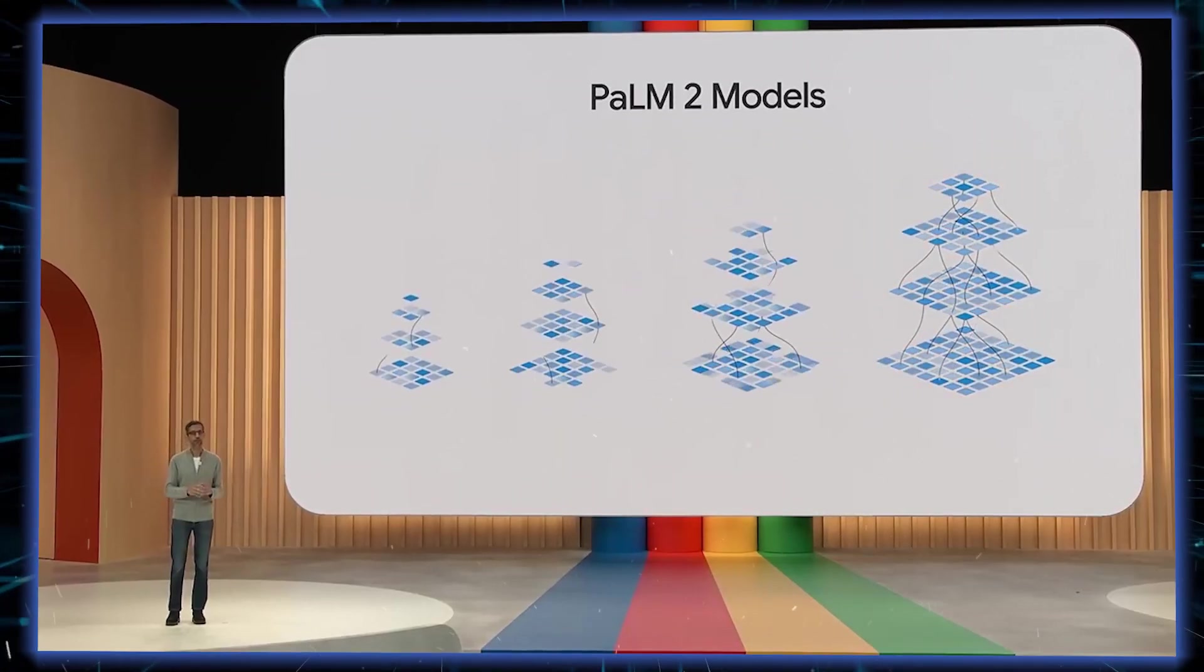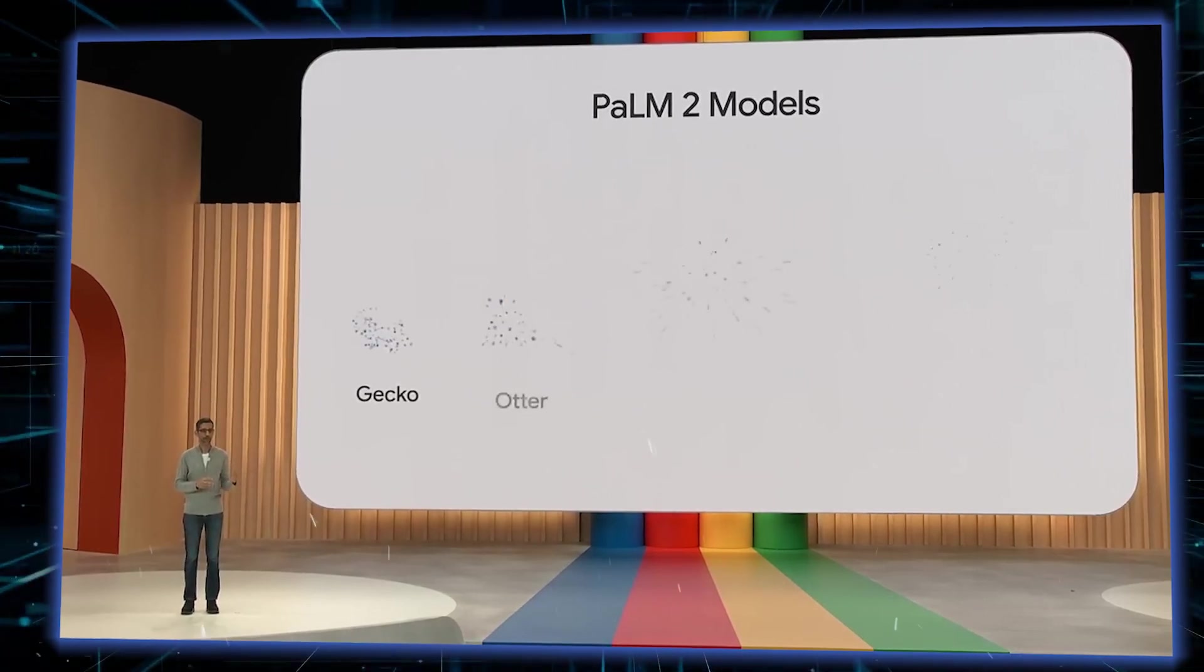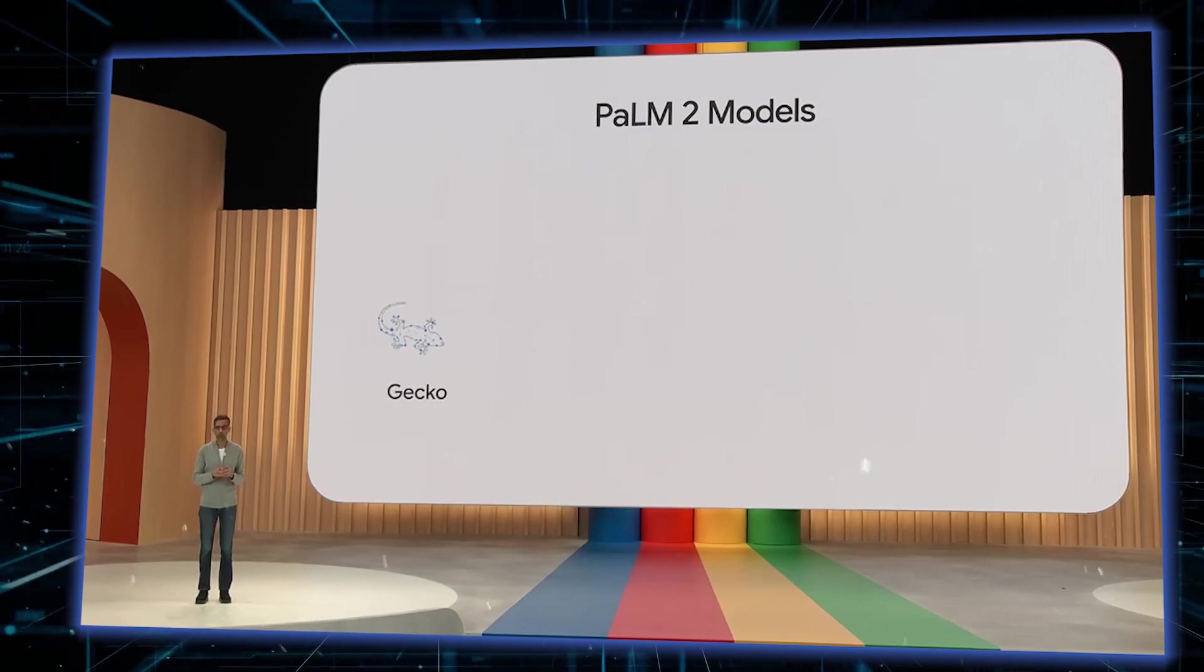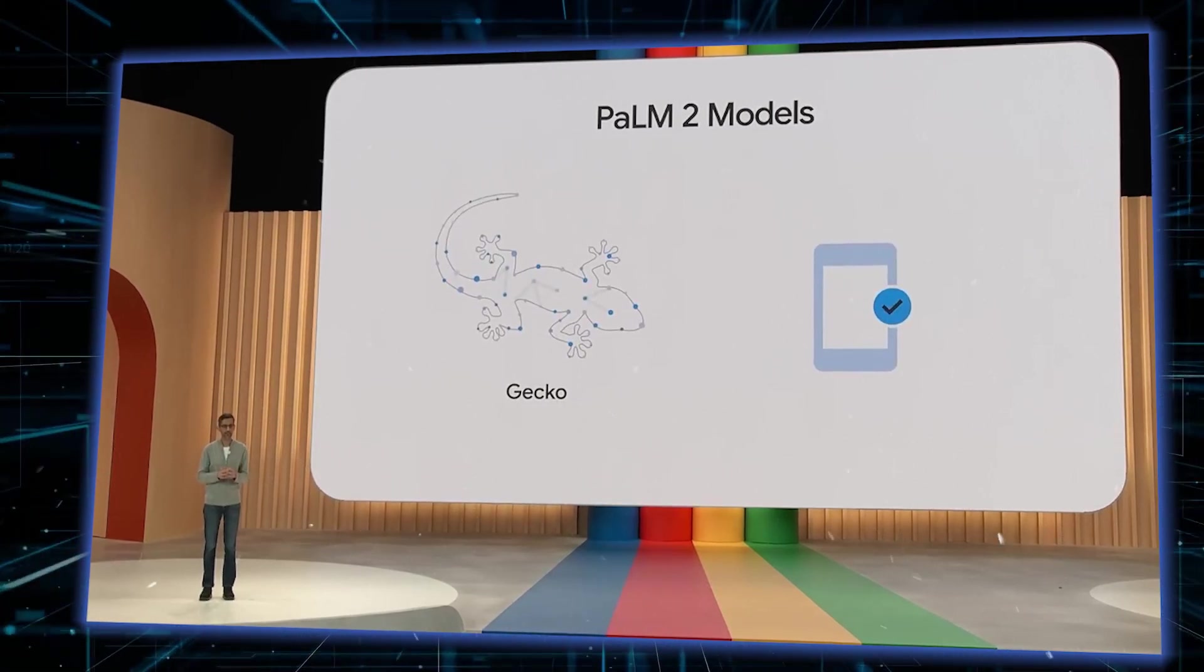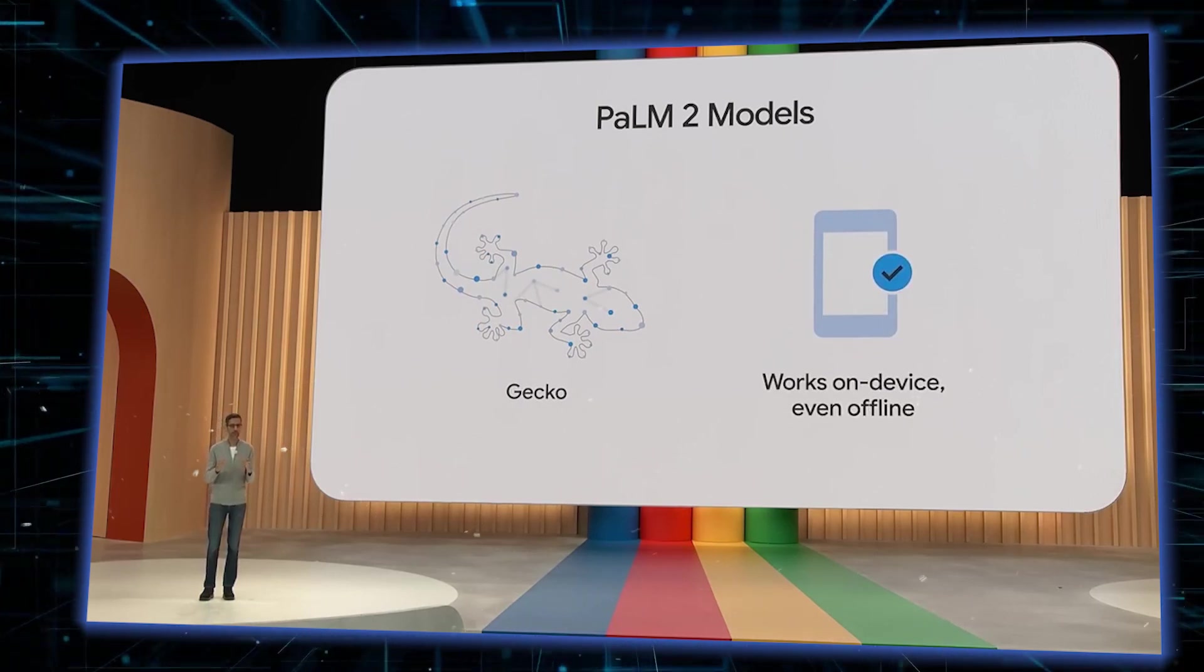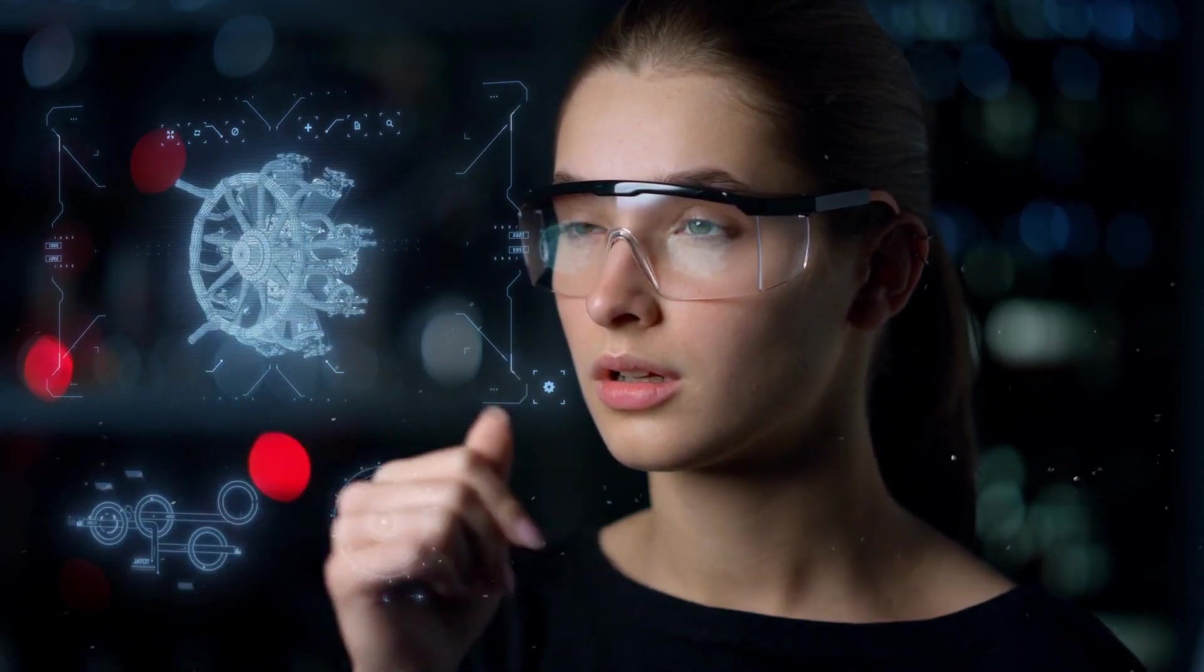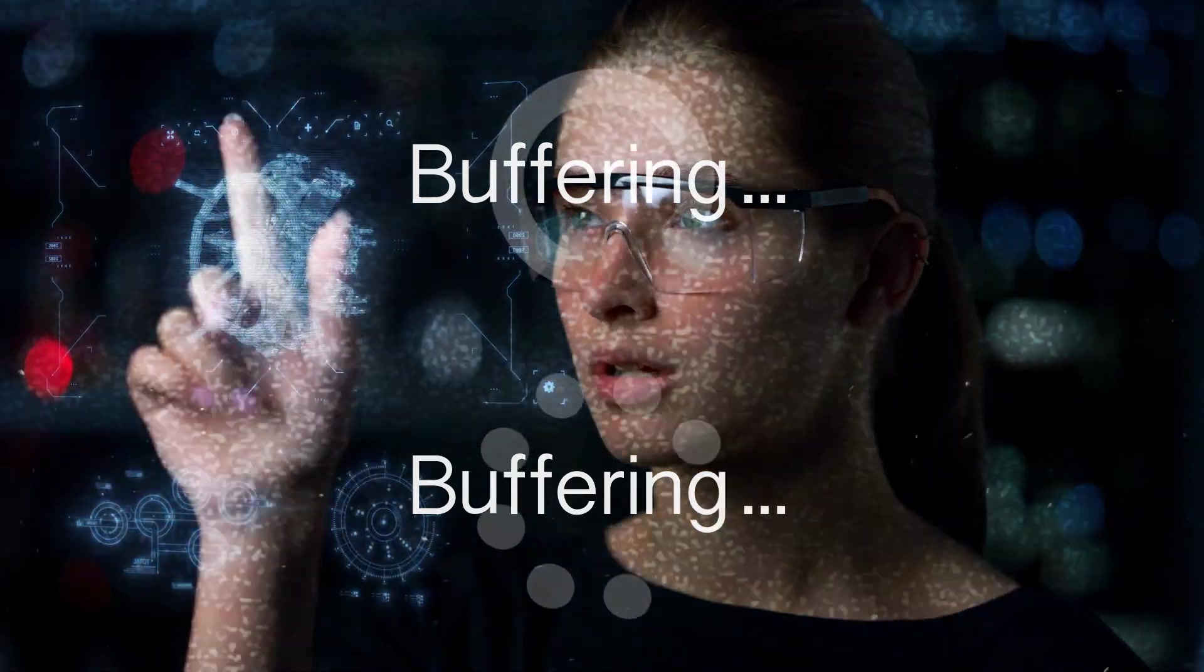PaLM 2 will be offered in four different sizes ranging from smallest to largest: Gecko, Otter, Bison, and Unicorn. The Gecko variant is incredibly lightweight, making it suitable for use on mobile devices. It performs exceptionally well, enabling seamless interactive applications even when offline. This means that users can enjoy great user experience and take advantage of PaLM 2's capabilities even without an internet connection.